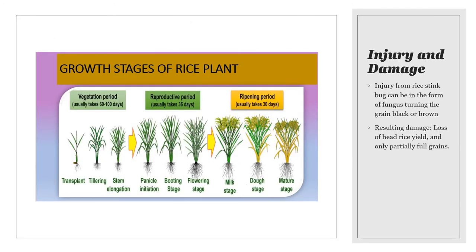Here you can see the growth stages of the rice plant. Injury and resulting damage occurs usually in the ripening period, consisting of the milk stage, dough stage, and mature stage, which is when the rice is ready for harvest.